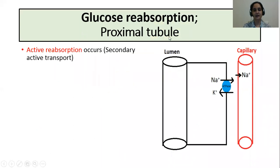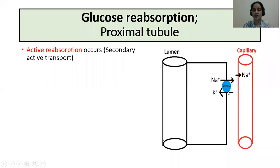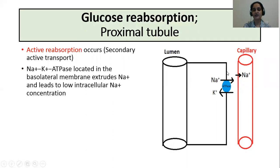Glucose reabsorption in the proximal tubule occurs by active reabsorption, and the transport mechanism is called secondary active transport. The driving force for this mechanism is the sodium-potassium ATPase pump, which is present on the basolateral membrane. This pump extrudes sodium into the interstitium, leading to a low intracellular sodium concentration, and creates a gradient between the tubular lumen and intracellularly for sodium.